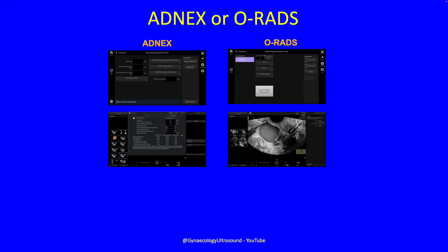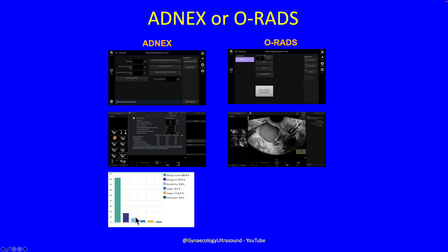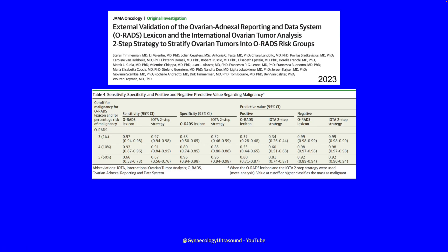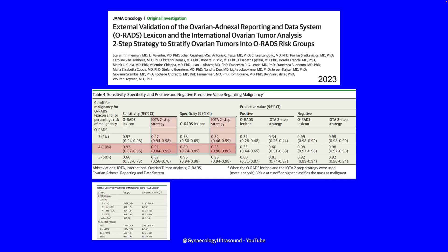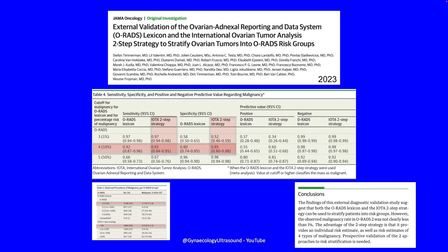Should you use ADNEX or ORADS? They're quite similar but have their own advantages — both are available on GE machines and some others. ADNEX gives you a percentage risk of malignancy and a suggestion of what kind of malignancy it might be, whereas ORADS gives good suggestions for management. The two systems have very similar sensitivity and specificity, and both are extremely useful.